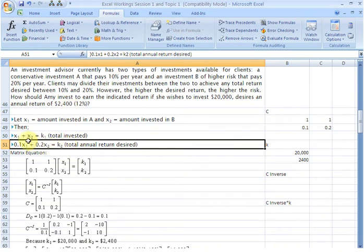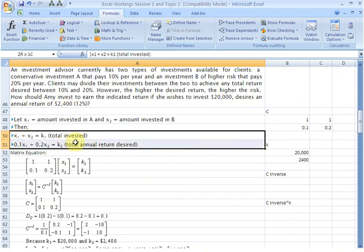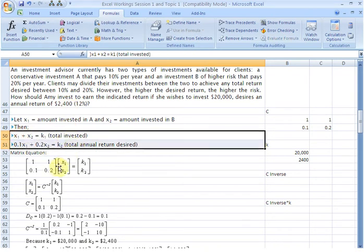So we had expressed this system of equations in matrix format. This one here, we have written the coefficient matrix, so the coefficient of X1 is 1 here, the coefficient of X2 is 1 here.